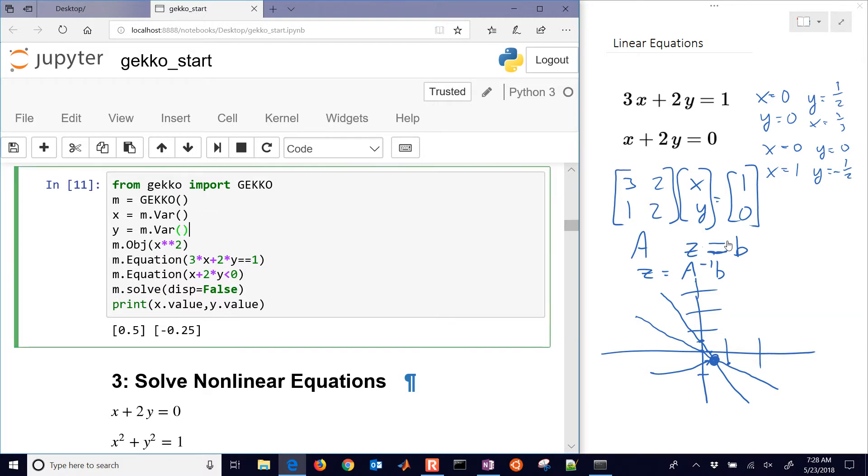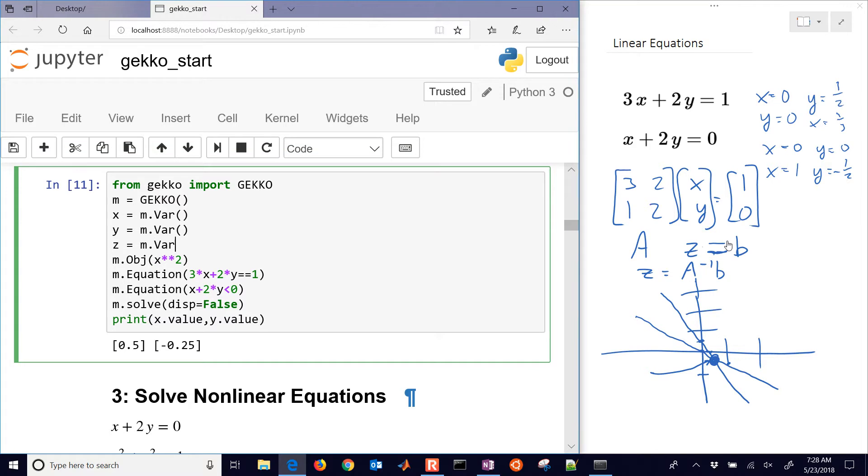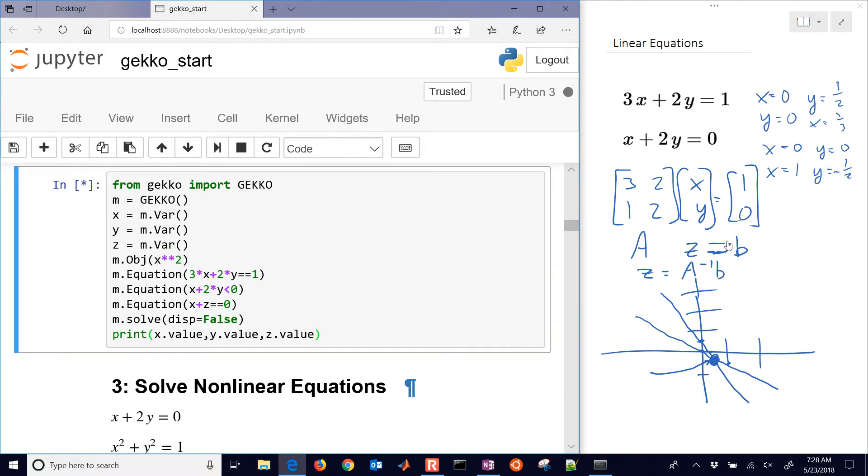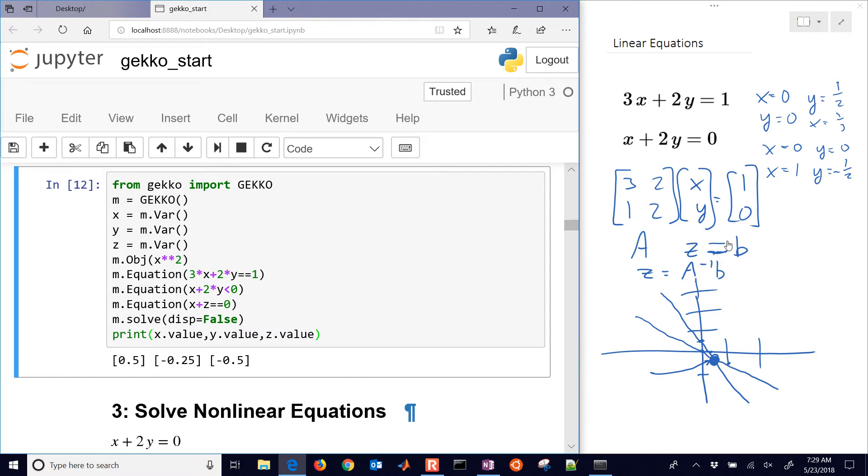You can also add additional variables to this, and additional equations. And then you just want to print out the solution to that. And so that you can have additional equations and variables. And it can be, they can be sparse, for example, where you don't necessarily have a y in this equation. You don't have a z in these other two equations up here.